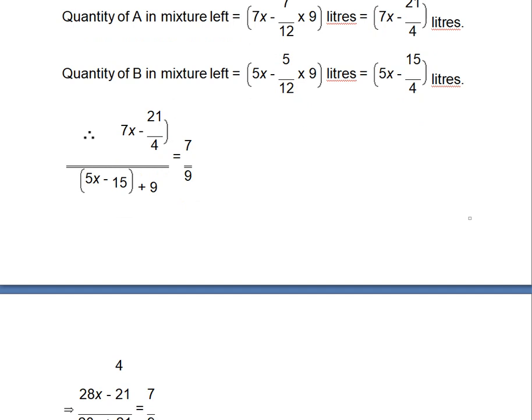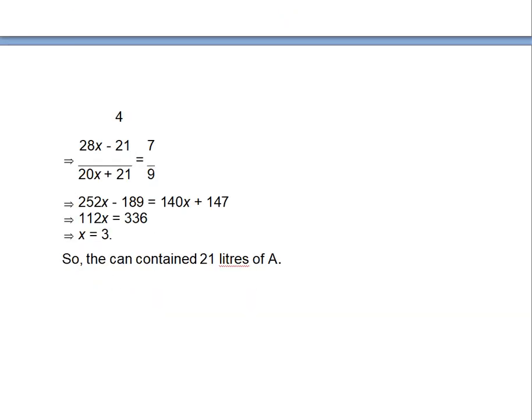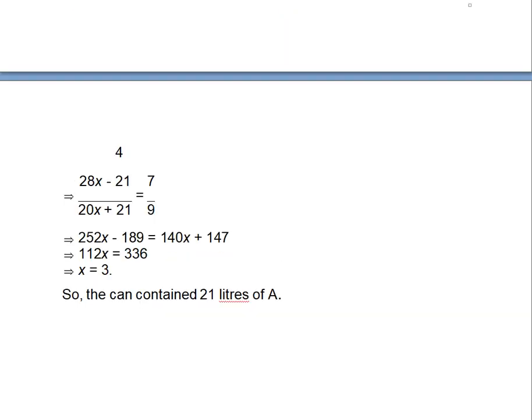Once you solve it, you get it as 252x minus 189 equals to 140x plus 147, that is equals to 112x equals to 336, and x equals to 3. So the can contains 21 liters of A. That means quantity A, this is your answer.